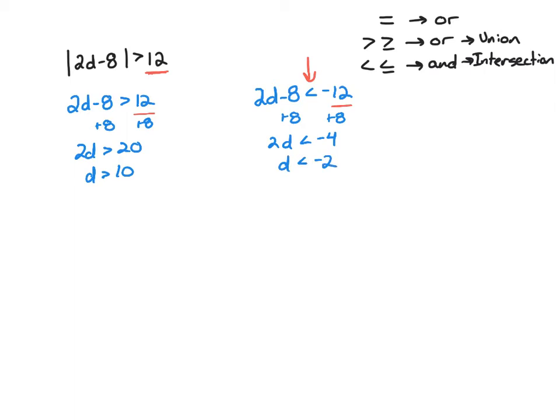Now that both are solved, I need to determine whether it's a union or an intersection. I look at the inequality at the time I split the absolute value into two problems — the absolute value is already isolated here. Looking at the chart: if you have an equals sign, it's always or. If you have a greater than, it's also or (a union). If it's a less than, then it's an and statement, or an intersection. So everything except less than is or. Less than is always and. In this case, we have a greater than, so it's an or statement.